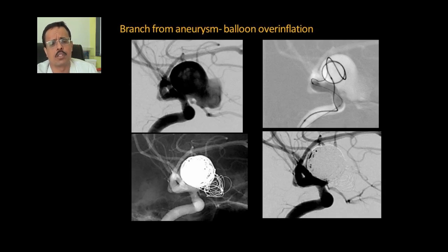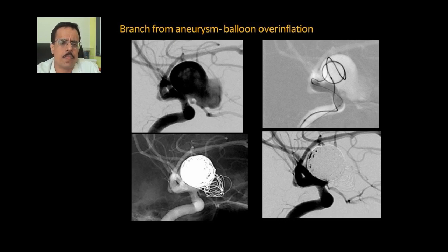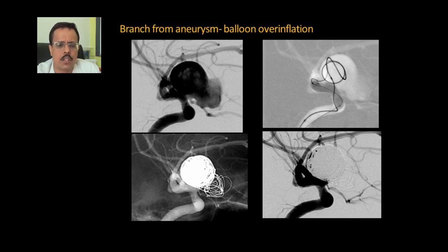Some patients have a branch coming from the aneurysm, for which we use the balloon overinflation technique. This is a giant ophthalmic aneurysm with the ophthalmic artery — the artery to the eye — coming from the base of the aneurysm. We overinflated a balloon and then started coiling, sparing a little bit of the neck along with the ophthalmic artery, resulting in a pretty good occlusion.